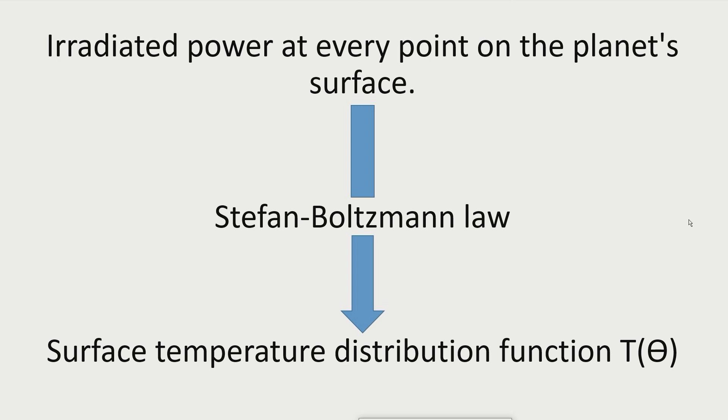What we are looking for is a surface temperature distribution function, T of theta, that assigns a temperature to each point on the planet's surface. With such a surface temperature distribution function, one can then calculate the mean surface temperature of the planet practically error-free.